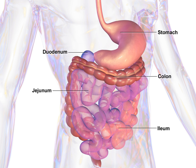In large bilaterians, the gastrointestinal tract generally also has an exit, the anus, by which the animal disposes of feces. Some small bilaterians have no anus and dispose of solid wastes by other means, for example through the mouth.